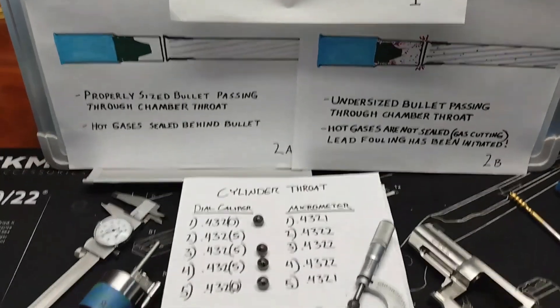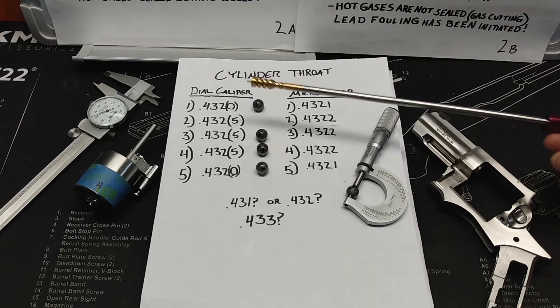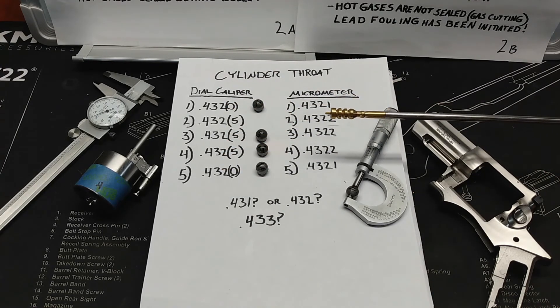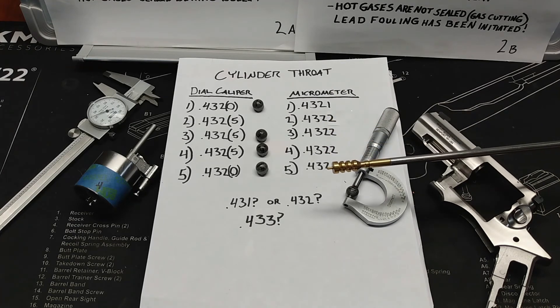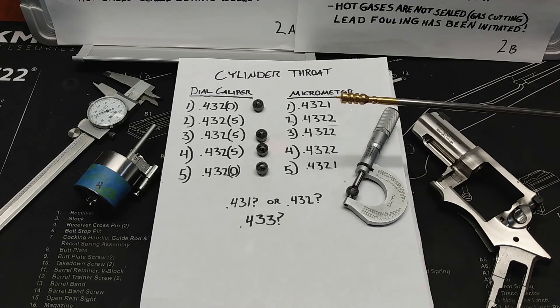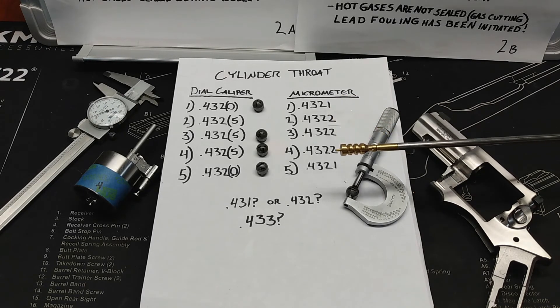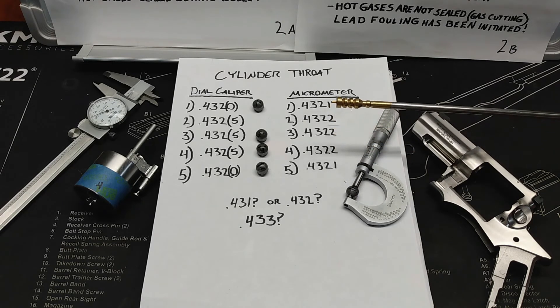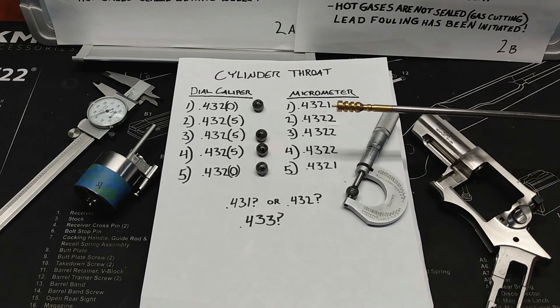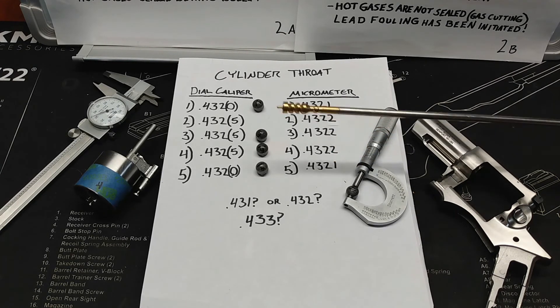So what bullet am I selecting here for the work that I'm doing? Well, I came up with my dial caliper 432 thousandths of an inch. I came up with my micrometer 432 thousandths of an inch. So what did I really gain by using this micrometer? Not a whole lot except for a pretty good detailed study of what my throats look like. My throats are in great uniformity. I'm very pleased with that. Does this mean a whole lot to me at this point? Not really as far as getting the right sized bullet, but it gives me confidence that my revolver is probably made a lot better than I would expect out of a production gun.